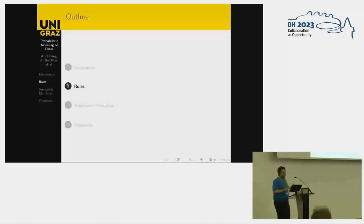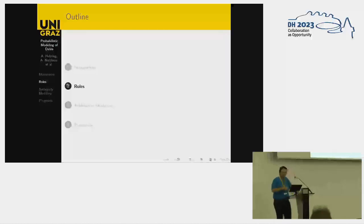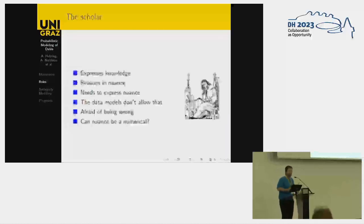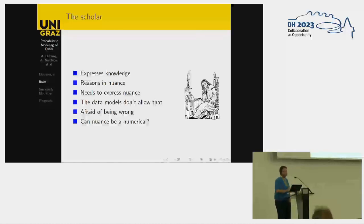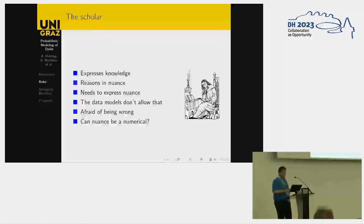If we want to think about that, we've got to think a bit about roles. It might be the same person, it might be machines, but somehow we have to think with different hats. We have a scholar — I think of an analog humanist when talking about the scholar. They express their knowledge, they reason in nuance, they need to express that nuance, and they don't have the means. They're afraid of being wrong. The real challenge is: how can they make numbers out of their nuanced knowledge?